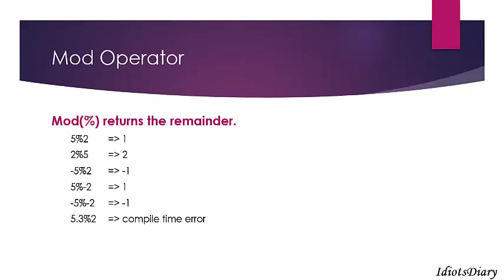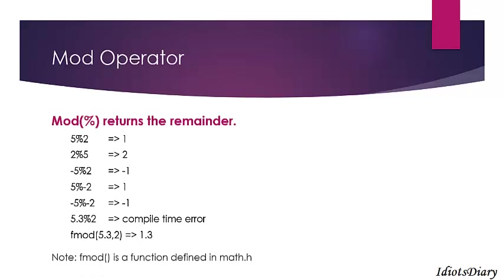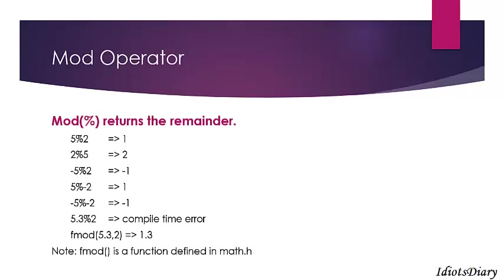In the next example, performing mod with a floating point value is a compile time error, because mod cannot be performed with floating point values. To perform mod with floating point values, you need to use the fmod function defined in math.h. For example, fmod(5.3, 2) will give a result of 1.3.